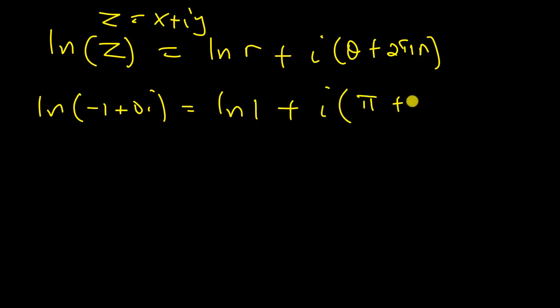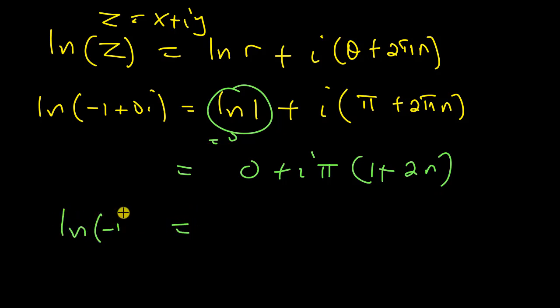We are almost there. The natural log of 1 is 0, so I have 0 plus i. I can factorize out π, so inside I have 1 plus 2n. So finally, my solution to natural log of negative 1 is iπ, or πi whichever I want, times 1 plus 2n.